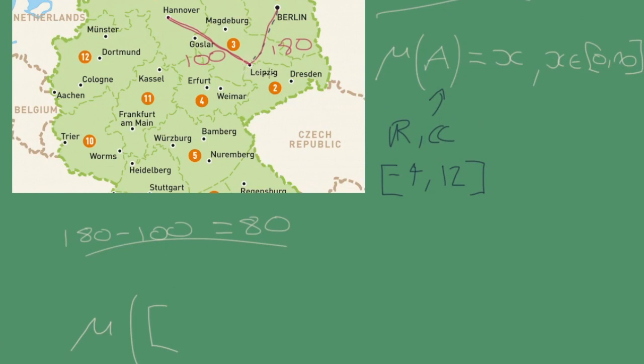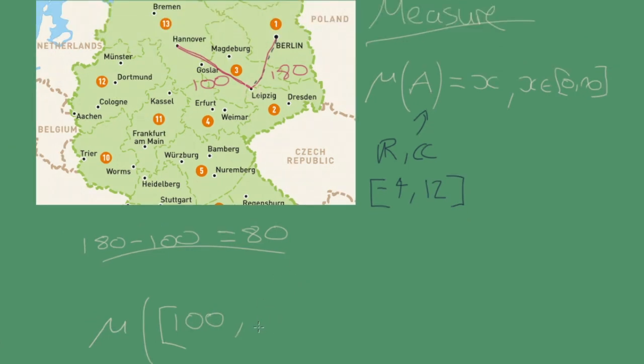Leipzig as 100 miles from the origin. So this is the zero point, and this is 100, so let's call this 100, and this, well, it's going to be 180. So the distance of this, the measure, is 80. It's 180 miles. And that's our first measure.